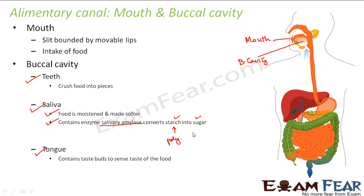The third thing present inside the buccal cavity is the tongue. The tongue contains taste buds to sense the taste of food — when we eat something we understand if it is sweet or salty because of this sensory organ. So the mouth serves only ingestion, while in the buccal cavity the food is broken down into simpler particles by the teeth and saliva, including conversion of starch to simple sugars by salivary amylase.